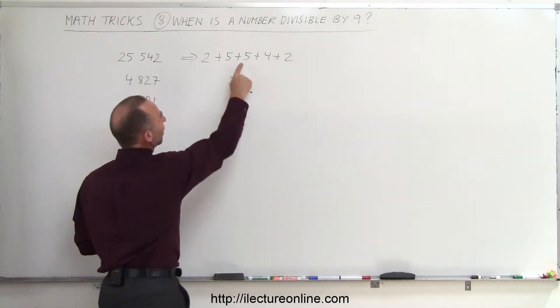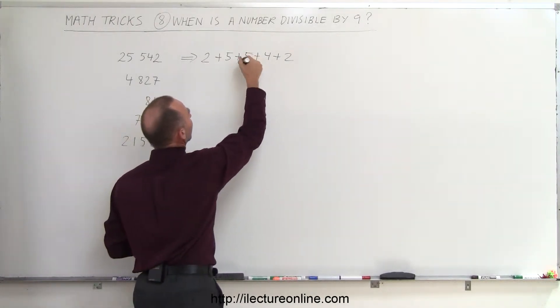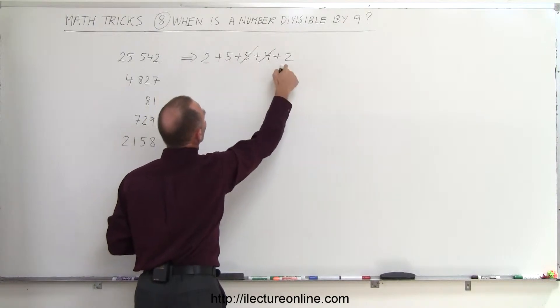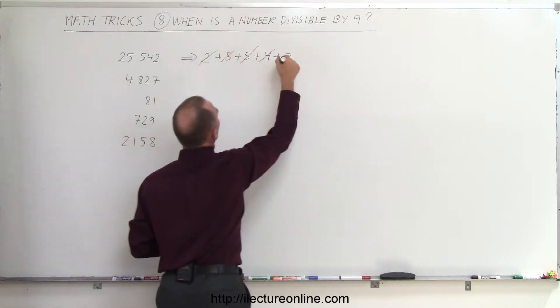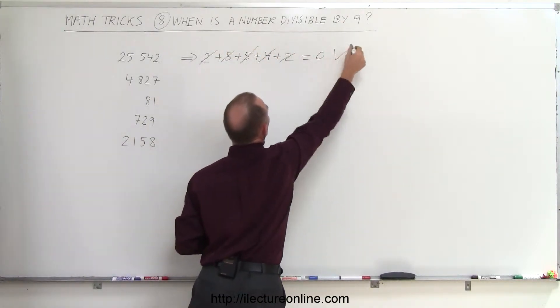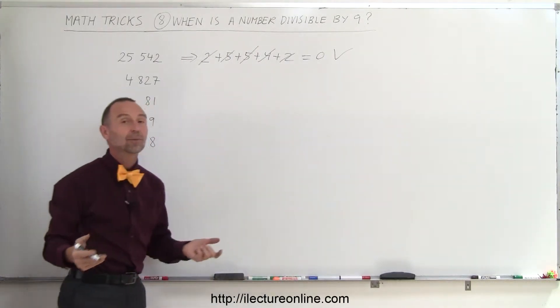Notice that 5 plus 4 add up to 9, so I can cancel that out. And 5 plus 2 plus 2 adds up to 9, so that cancels out. That equals 0, and therefore that number is divisible by 9.